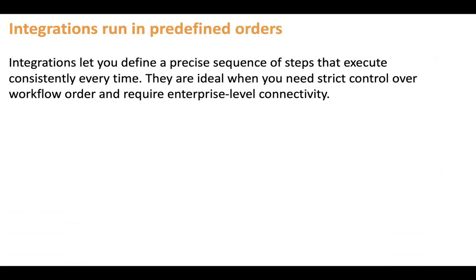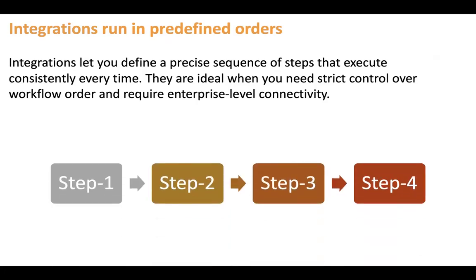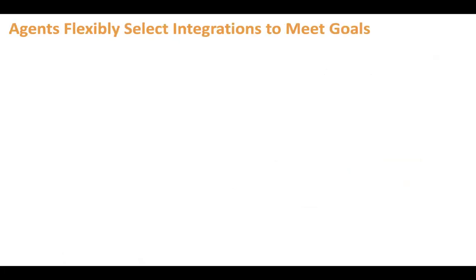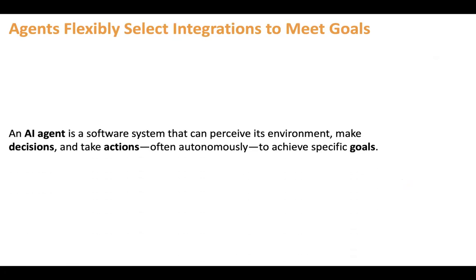Integrations run in a predefined order — all integrations we build run in a specific sequence defined at design time. Integration lets you define a precise sequence of steps that execute consistently every time. This is important when you need strict control over workflow order, requiring enterprise-level connectivity. However, an AI agent flexibly selects which integration to call to meet the goal.